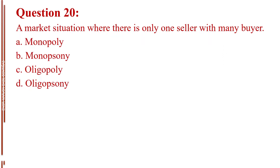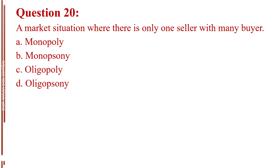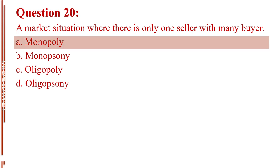Question number 20. A market situation where there is only one seller with many buyers. Letter A, monopoly. Letter B, monopsony. Letter C, oligopoly. Letter D, oligopsony. The answer is Letter A, monopoly.